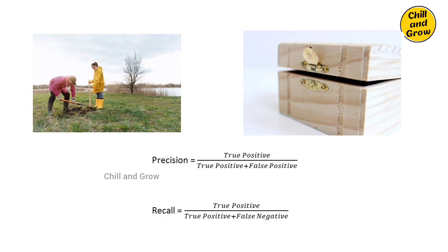Let's look at the scenario. If you find a treasure where there is treasure, that is True Positive. If you dig in a spot where there is actually treasure but the device said no, and you didn't dig — that is False Negative. Recall focuses on not missing any treasure — increasing True Positives and decreasing False Negatives — meaning you dig in all areas.